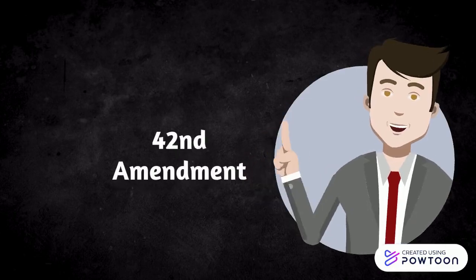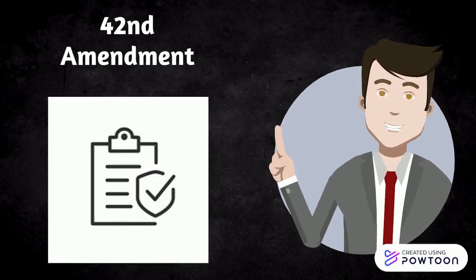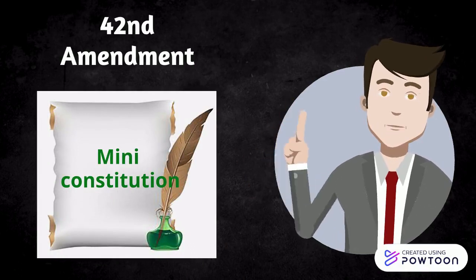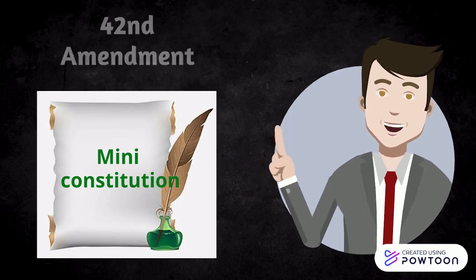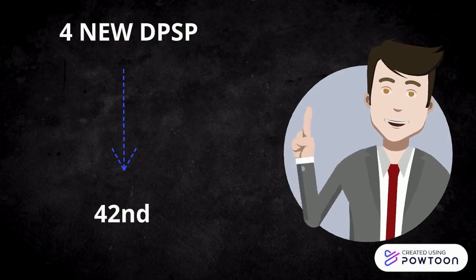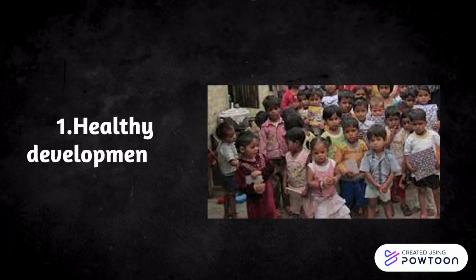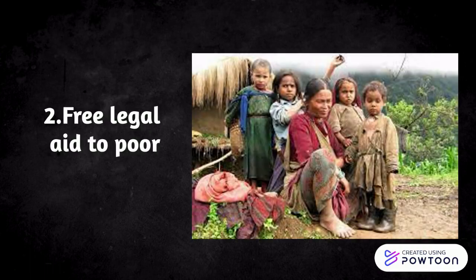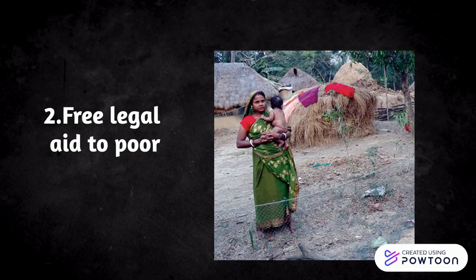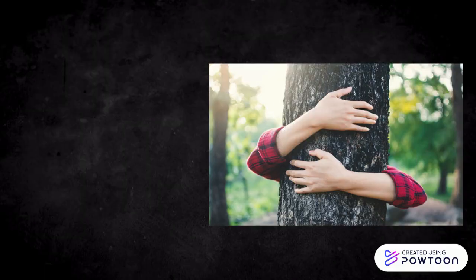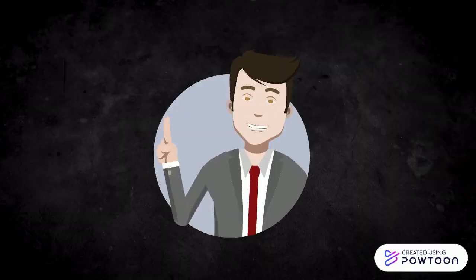In the 42nd Amendment — which is known as a mini-constitution — four new Directive Principles of State Policy were added: 1. Healthy Development of Children, 2. Free Legal Aid to Poor, 3. Participation of Workers in Management of Industries, 4. Safeguard Forest and Wildlife.